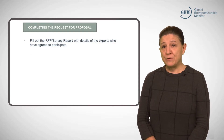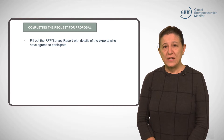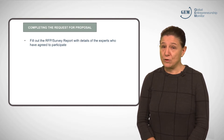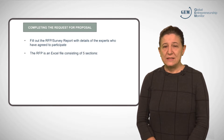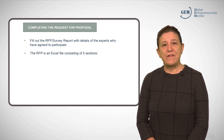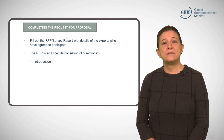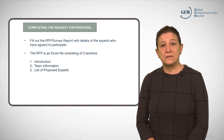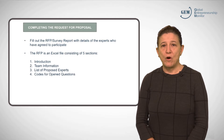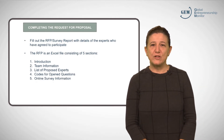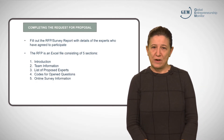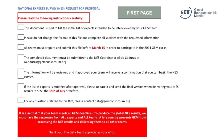As experts agree to participate in your survey, you should fill out the NES Request for Proposal or survey report. This is an Excel file comprising five sections: the introduction, information about your team, the list of proposed experts, codes for open-ended questions, and information for the online survey. Let's take a look at the main pages in the document.